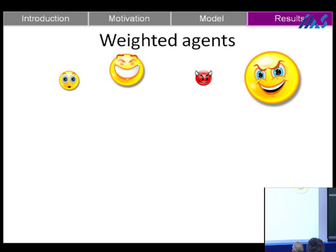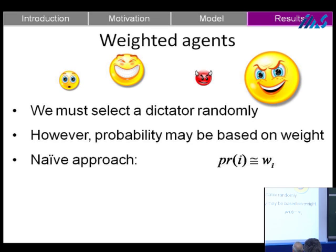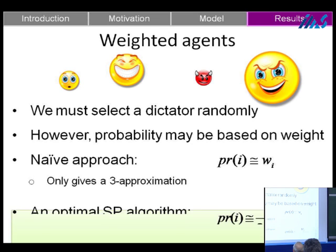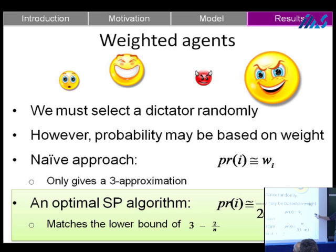Briefly on weighted agents: until now all agents had equal weight. The naive approach of setting each agent's probability proportional to its weight gives a 3-approximation. However, if instead we set the probability proportional to a different equation, we do better and achieve an approximation matching the lower bound of (3 - 2/n), generalizing the previous results.